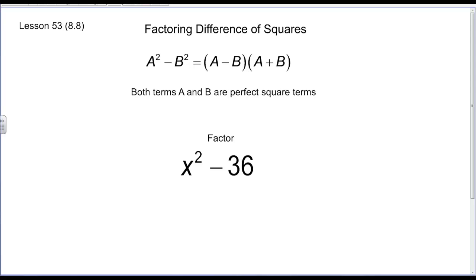At this point, we've factored a couple of different trinomials using two different methods. Today we're going to look at another special type of circumstance where what we're doing is factoring what we call difference of squares. A difference of squares is exactly what it says — it's a subtraction of two terms that are perfect squares.